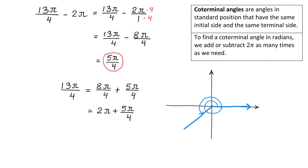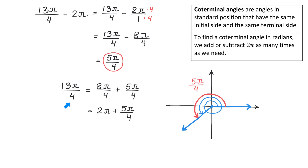Now we can draw the terminal side of the angle. Recall that pi over 4 is 45 degrees, but we have 5 pi over 4. This means that here we have 1 pi over 4, 2 pi over 4, 3 pi over 4, 4 pi over 4, and then 5 pi over 4. The coterminal angle must have the same initial side and the same terminal side, so this is the angle that measures 5 pi over 4. This is an angle between 0 and 2 pi radians and it is coterminal with 13 pi over 4.